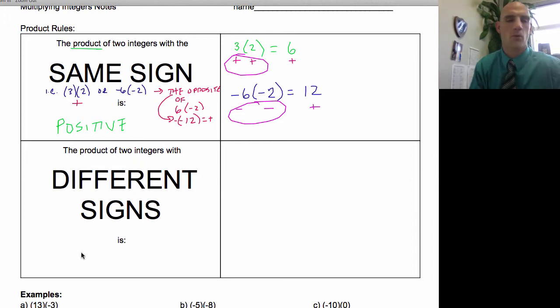Different signs. Only a couple ways this could happen. So for example, this would be like three times negative two. So that's three groups of negative two. So if I think about that in terms of my counters, I get a red.